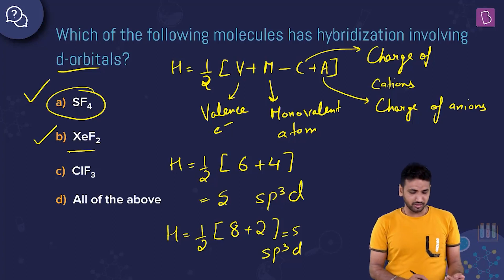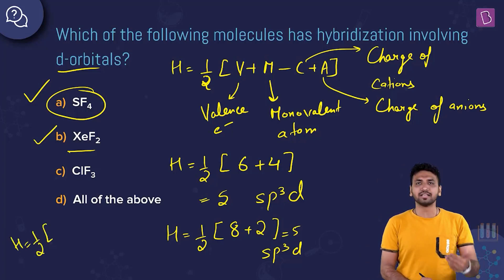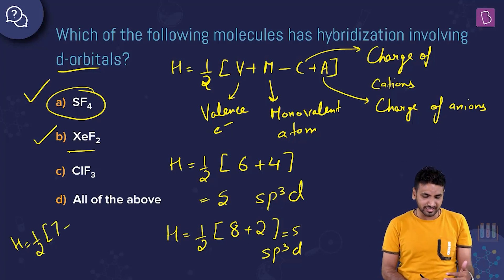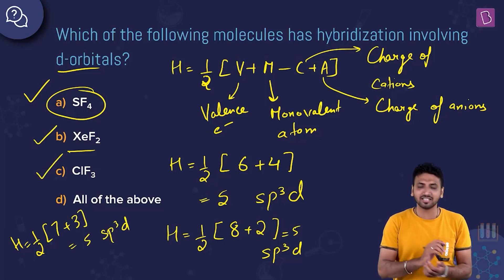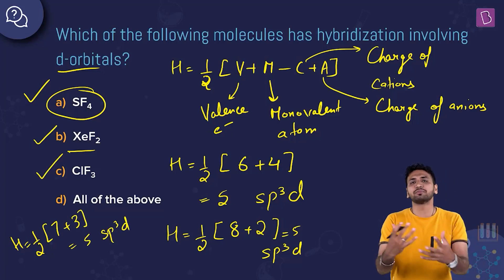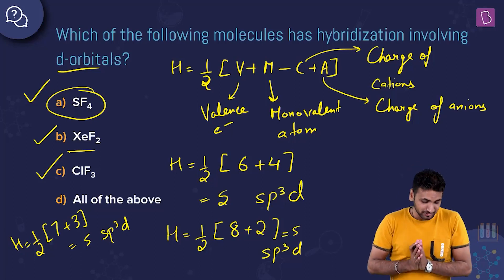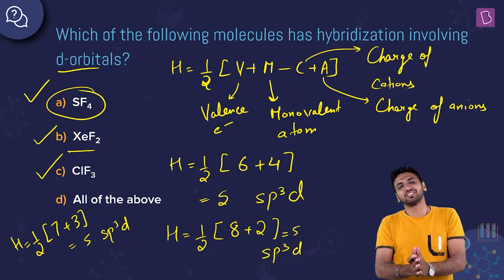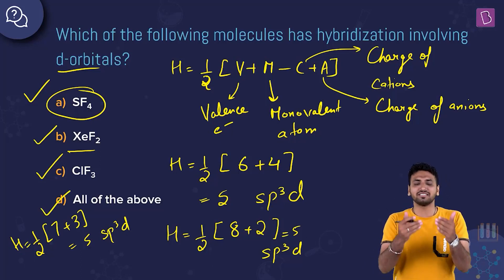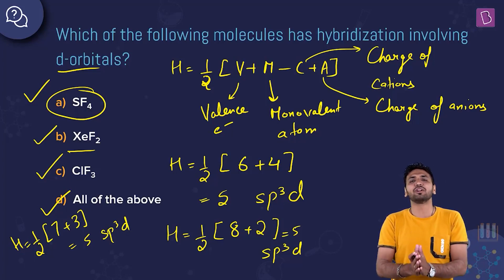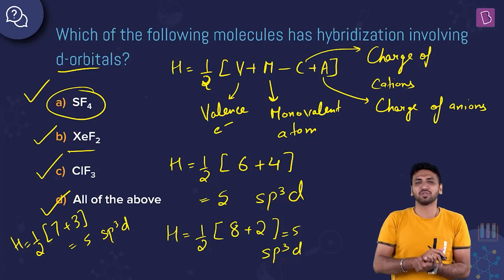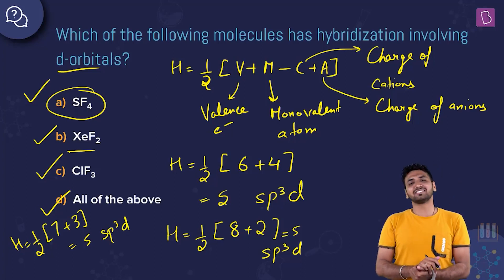For ClF3, chlorine is in group 17 with seven valence electrons. Fluorine is monovalent, so: one by two of (7 + 3) = 10 by 2 = 5, which is sp3d hybridization again. So SF4, XeF2, and ClF3 all have the central element with d orbital participation in hybridization. The right answer is D.